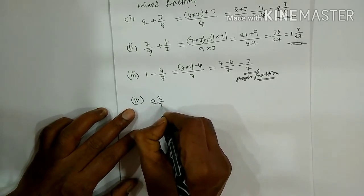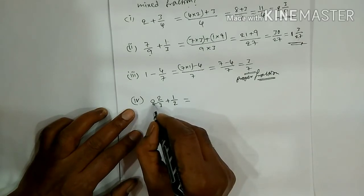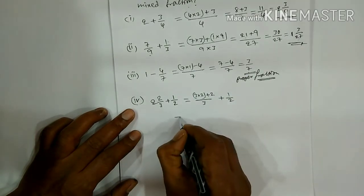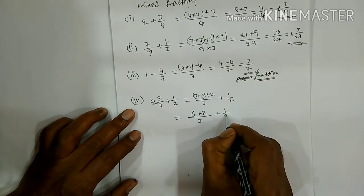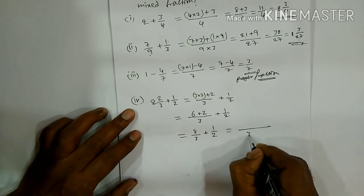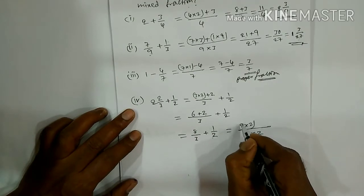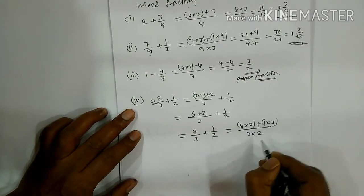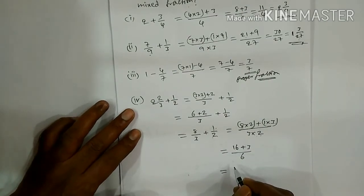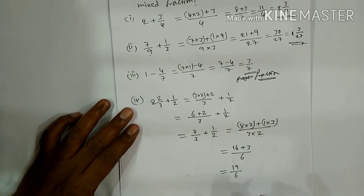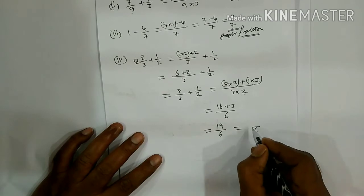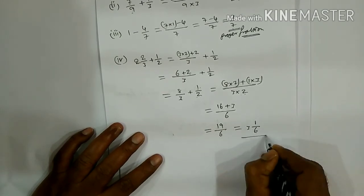Fourth bit: 2 and 2 by 3 plus 1 by 2. First convert: 3 into 2 plus 2 by 3 gives 8 by 3, and 2 into 1 plus 1 by 2 gives 3 by 2. LCM of 3 and 2 is 6. So 8 into 2 plus 1 into 3 gives 16 plus 3 equals 19 by 6. This is improper; as a mixed fraction: 6 threes are 18, 18 plus 1 is 19, so the answer is 3 and 1 by 6.